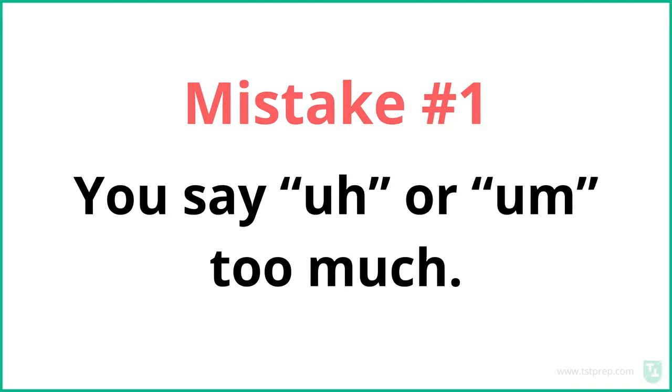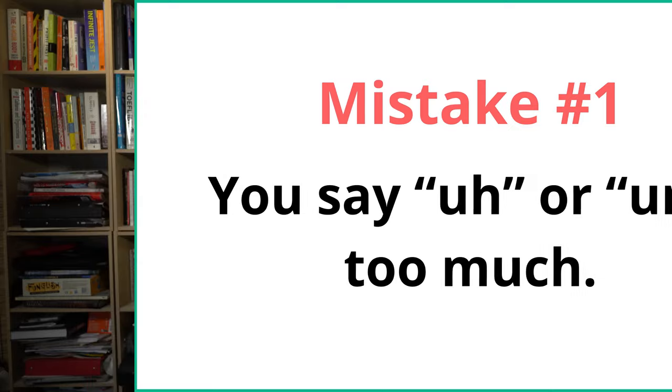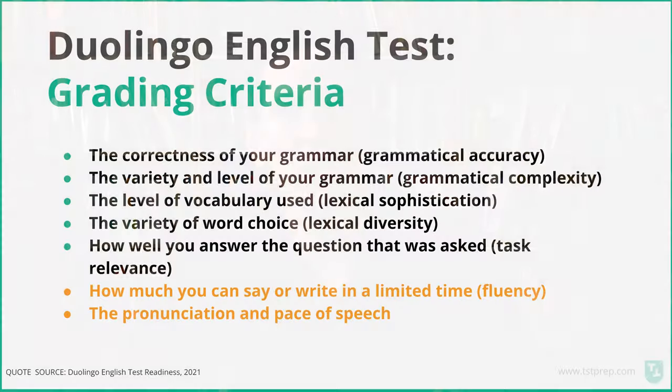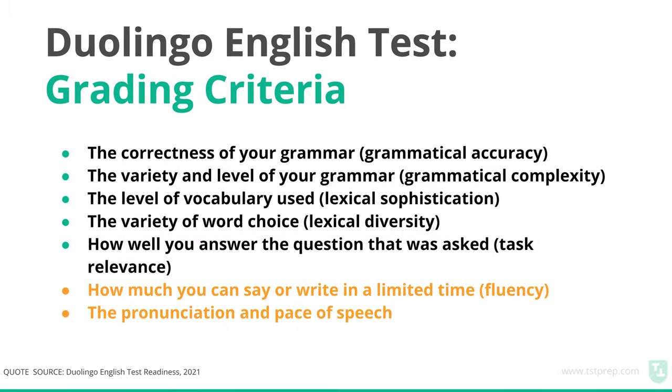Duolingo English test speaking mistake number one is that you say 'uh' or 'um' too much. This is very natural — everybody says 'uh' or 'um'. I do it all the time. I'm sure I'm going to hear in the comments 'you said um like 20 times in this video.' For the Duolingo English test, you want to try to avoid saying 'uh' or 'um'. Here's why.